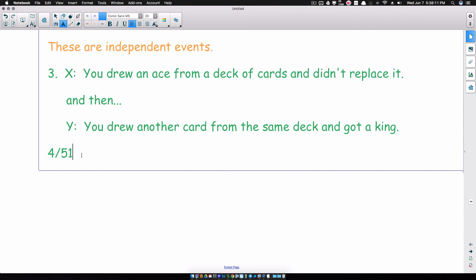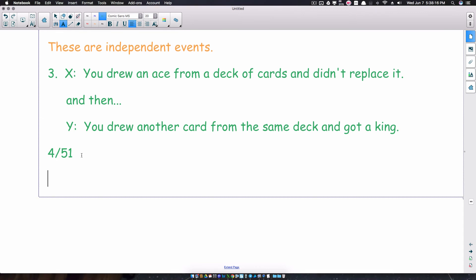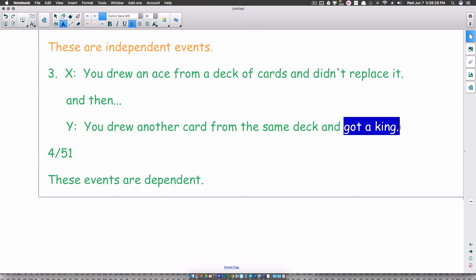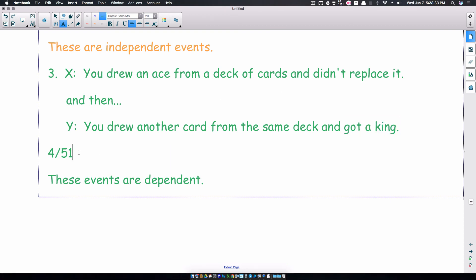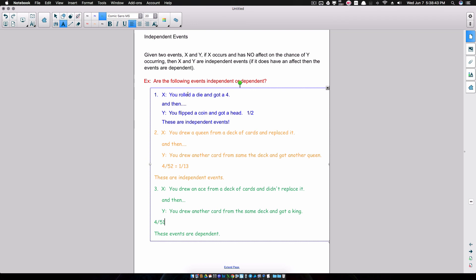So, hopefully you can see here the chance of you getting a king did change. Actually, the chance of you getting a king got slightly better in terms of probability. But, we'll save all that stuff for a little bit later. So, these events are dependent. And, again, that's because we did change our probability of getting a king. Think about it originally. If you just had a standard deck of cards and I said, what's the probability of you getting a king? It would be 4 out of 52. But, notice if we did not replace that card from event X, then we don't have 52 cards anymore. We got 51. So, I hope that makes sense there.